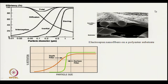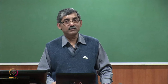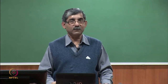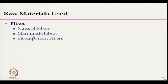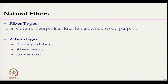Now, what are the raw materials used in filter fabrics? Different types are used: natural fibers and synthetic fibers. Natural fibers include cotton, hemp, sisal, jute, wool, and wood pulp. Their advantages are that they are biodegradable, absorbent, and low cost.